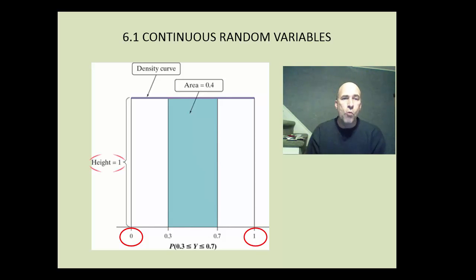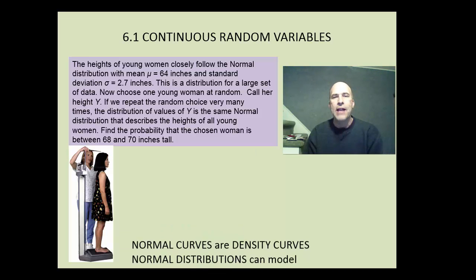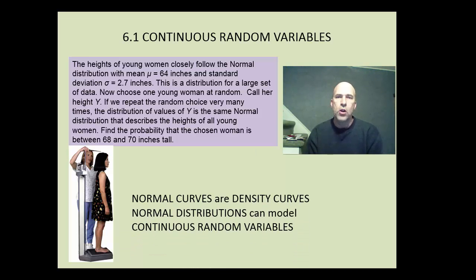For example, what I have here is a density curve, although it doesn't look like a curve. It just looks like a square or rectangle that starts at 0 and goes to 1. We're told it has a height of 1. And we want to find the probability that Y is between 0.3 and 0.7. Well, what a density curve allows us to do is just find the area, and the area will represent the probability. So here the area we're looking for is 0.4. So this is somewhat of an idealized density curve. But most of the time for these types of problems, we just look at it as a normal curve. And normal curves are density curves. And normal distributions can model continuous random variables.